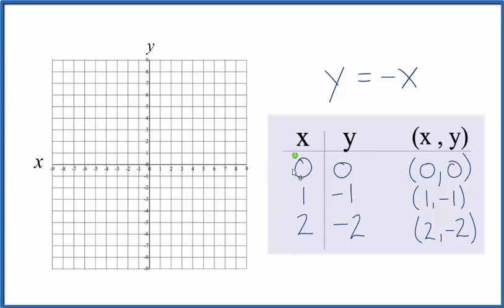So we have x is 0, y is 0, right here at the origin. Then we have x is 1, y is negative 1, down here. And then x is 2, y is negative 2.